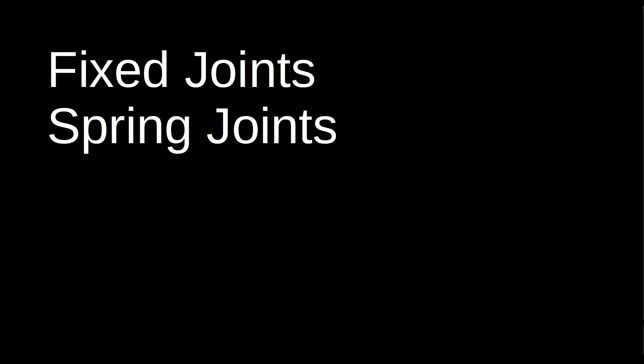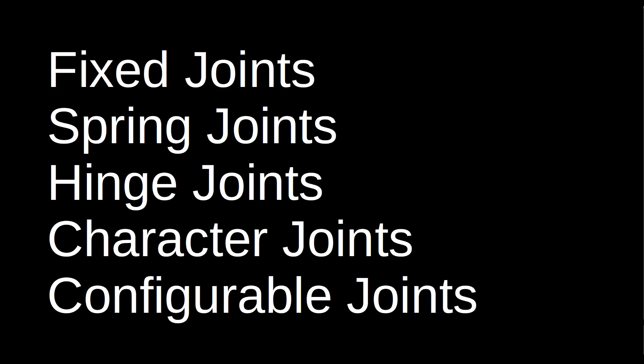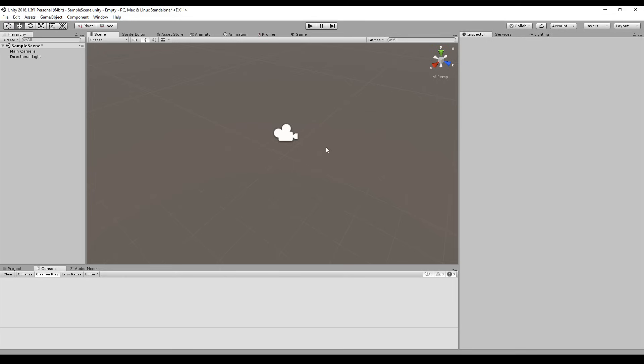In this video we will talk about all Unity Joints. We will cover Fixed Joints, Spring Joints, Hinged Joints, Character Joints, and Configurable Joints — we are talking about all of them. You can find the timecodes in the description so you can skip the parts you don't need. At the time of recording, you can't find any tutorial on YouTube that covers all the joints of Unity, so this is very exciting.